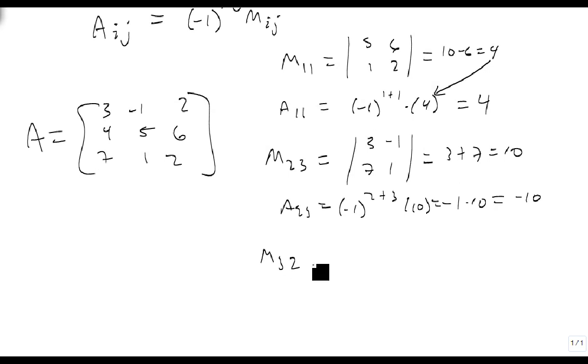Finally, we had M32, which was third row, second column, which was 3, 2, 4, 6, which again was equal to 18 minus 8, which was also 10. And A32 is equal to minus 1 to the 3 plus 2 times 10, which is equal to minus 1 times 10, which is also minus 10.